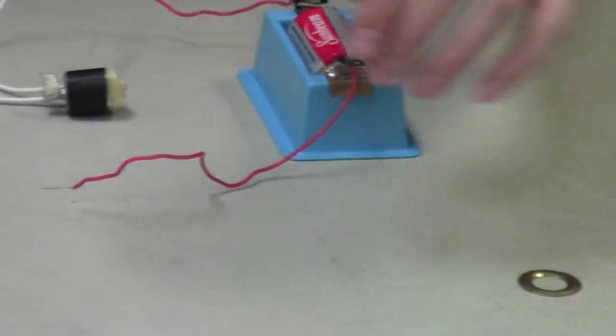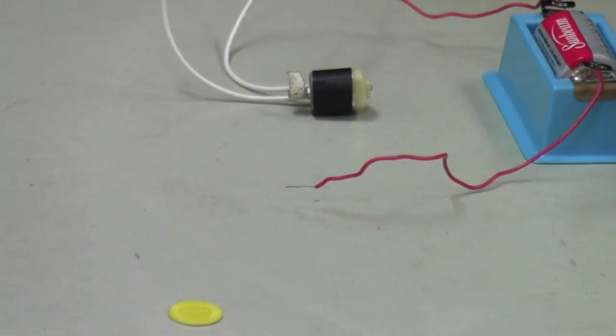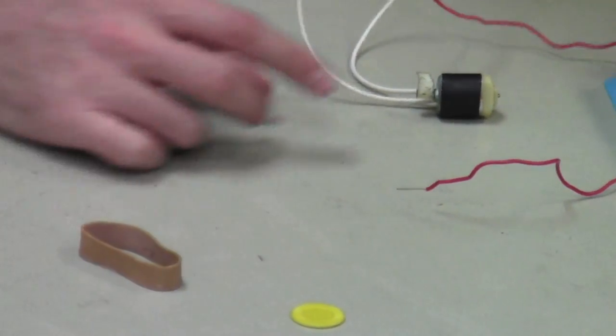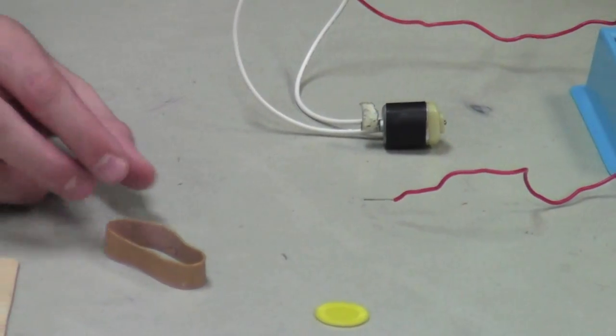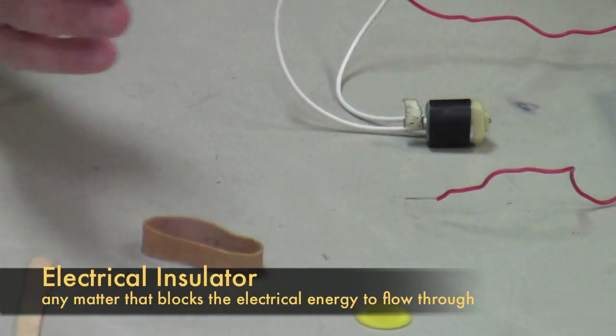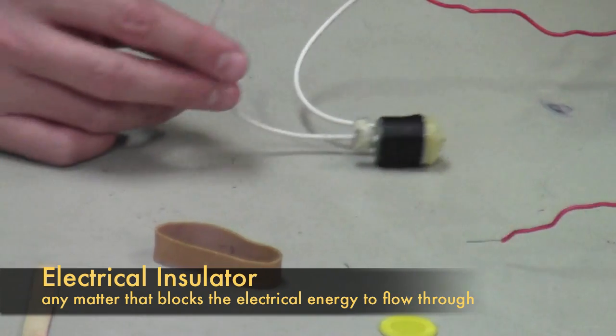Now, if we talk about electrical insulators, electrical insulators is the opposite of an electrical conductor. An electrical insulator blocks or does not allow the electrical energy to flow through it.